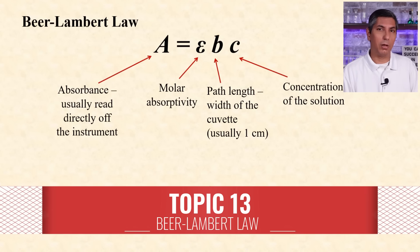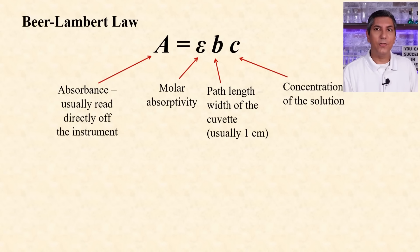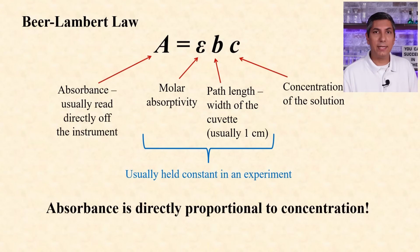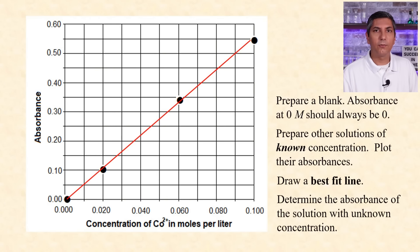When we work with spectrophotometry in the lab, we use the Beer-Lambert law. Often written A equals epsilon BC, the A is absorbance, which is a value that we normally read right off the spectrophotometer. Epsilon is the molar absorptivity, which is dependent on the substance and the wavelength. B is the path length, or the width of the cuvette, usually that's one centimeter, and C is the concentration of the sample in moles per liter. Since epsilon and B are usually held constant in an experiment, we can plot concentration on the x-axis and absorbance on the y-axis for our known concentrations. Build a calibration curve and use that to determine your unknown concentration.